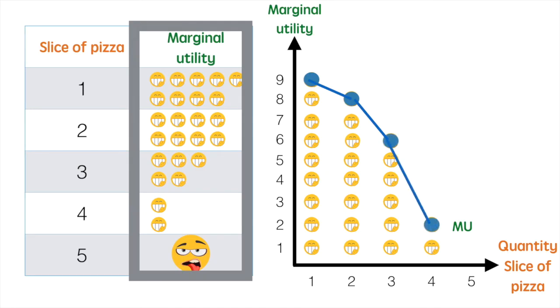If I was willing to pay $1 for each unit of utility, I'd be willing to pay up to $9 for the first slice, $8 for the second slice, $6 for the third slice, and $2 for the fourth slice.